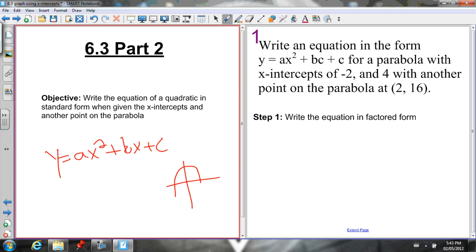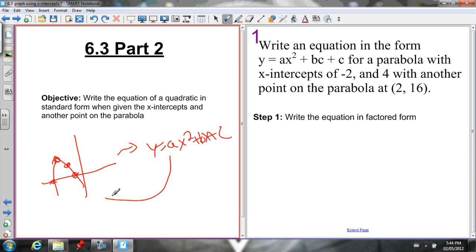In this section, we're going to go the other way. If we're given information about the graph, if I tell you what the vertex is or what the x-intercepts are and what another point is, you're going to be able to write the equation in standard form. So this second part is going the opposite way. First part, we went from the equation to the graph. This part, we're going from the graph to the equation.